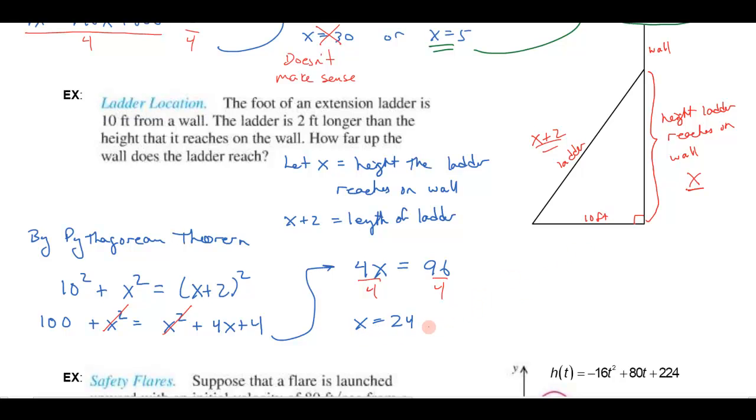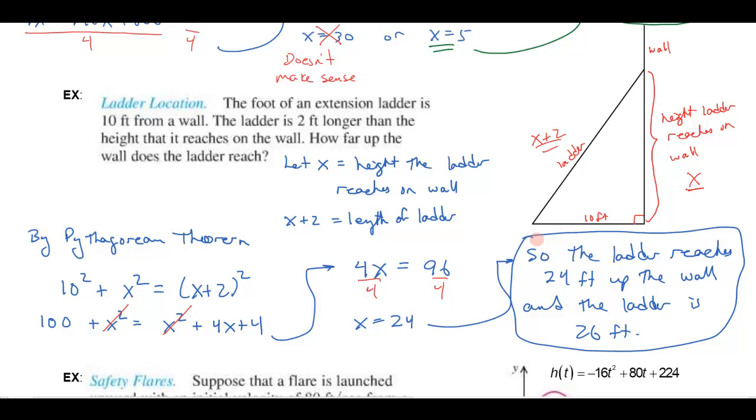So what that means, let's go back to my problem. Let's answer the question. What's x again? It's the height the ladder reaches on the wall. So the ladder reaches 24 feet up the wall. And it didn't ask for this, but x plus 2. That means the ladder's got to be longer than that, right? Because it's going to be leaning up against it. And so the ladder is 26 feet.